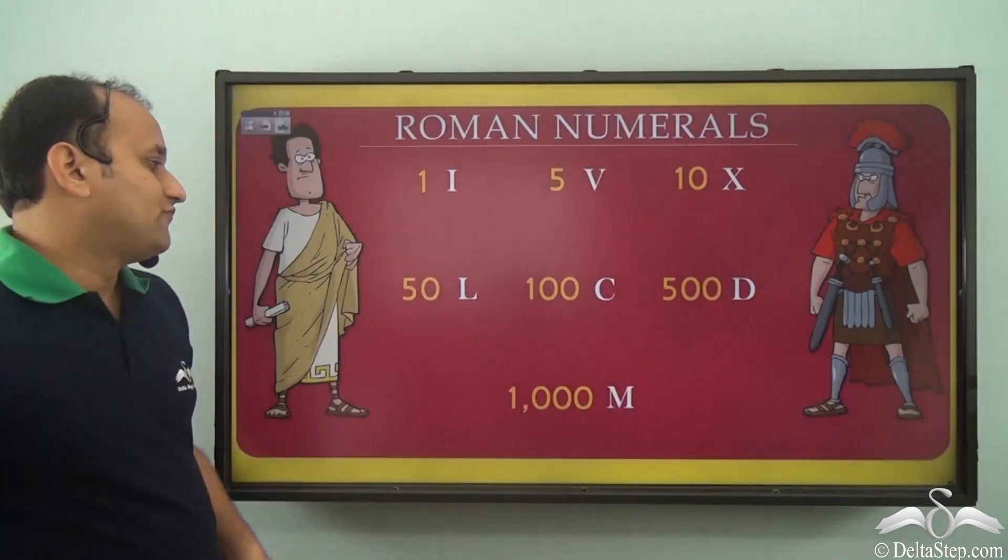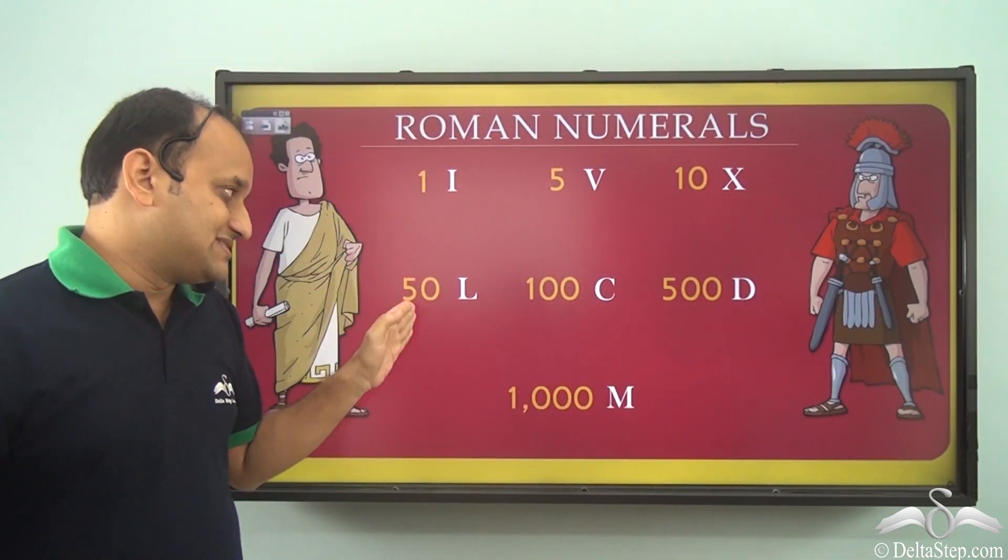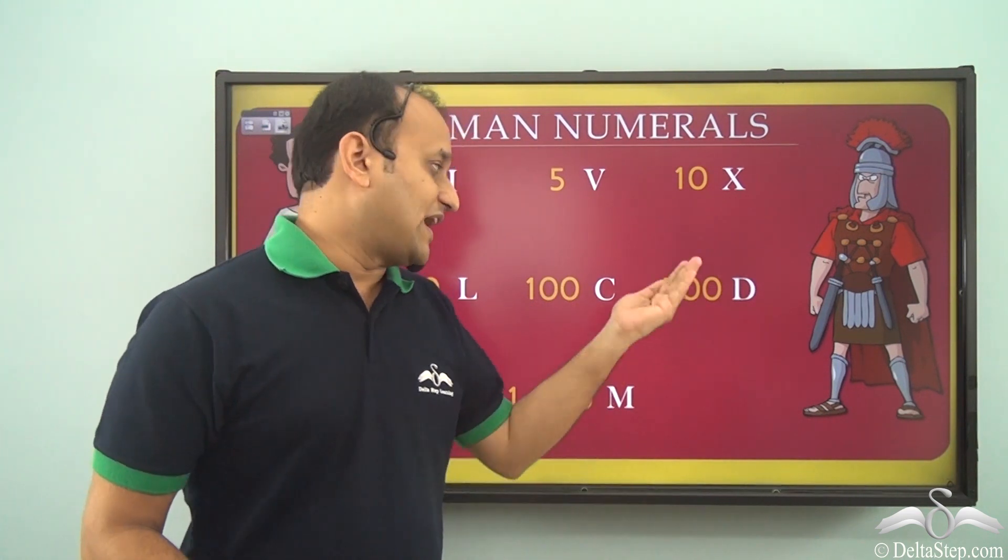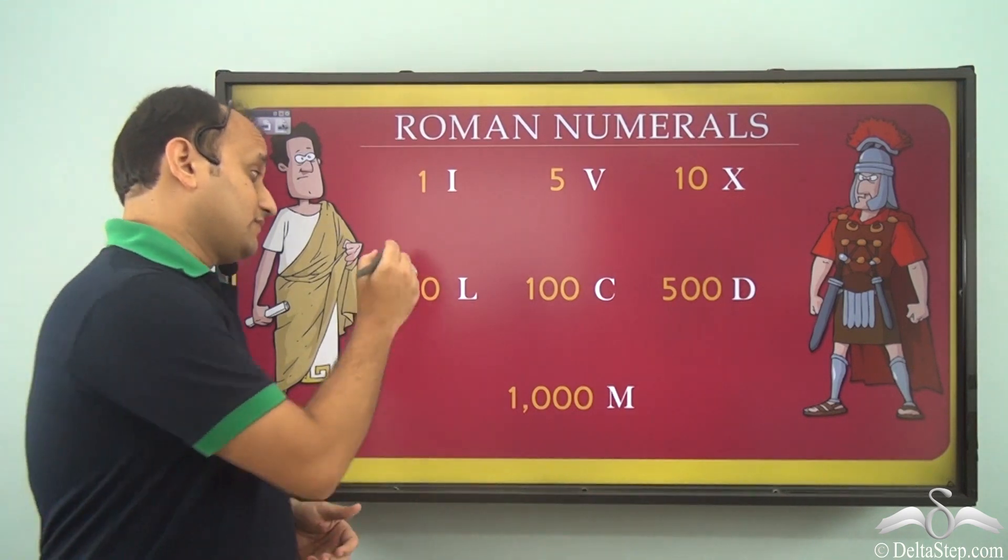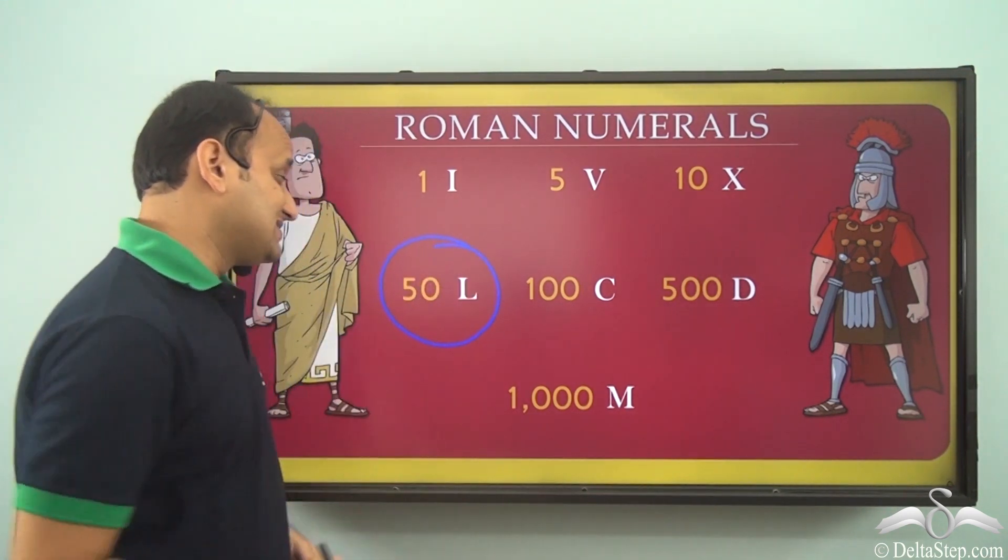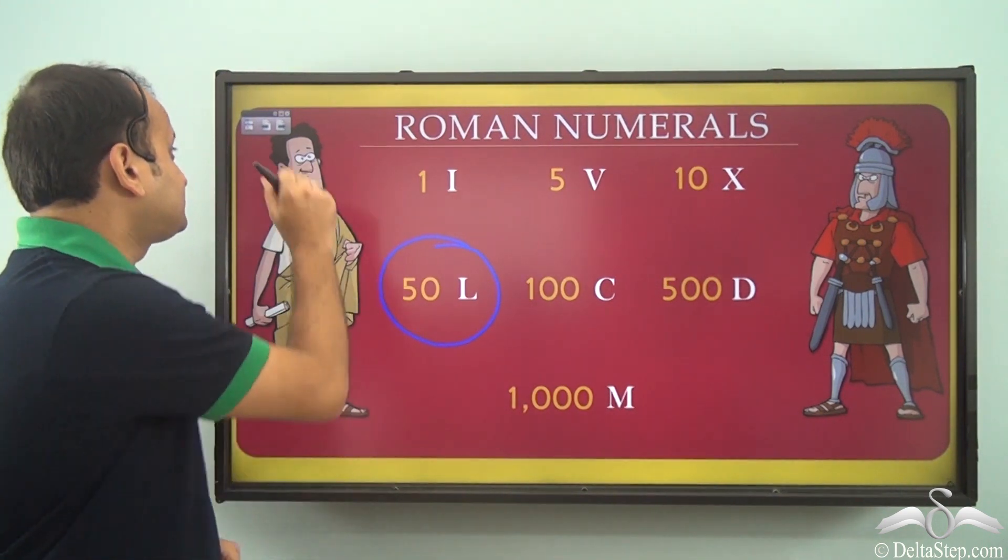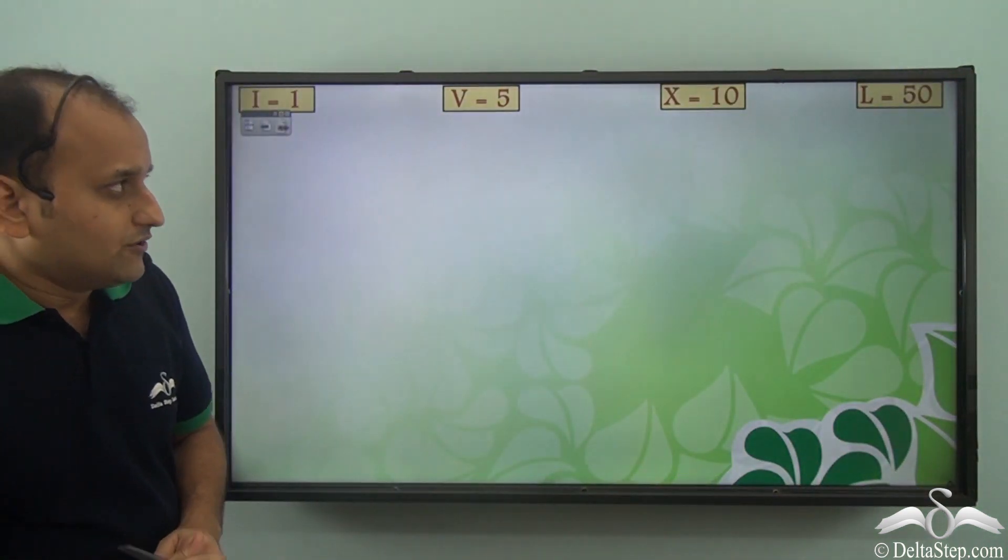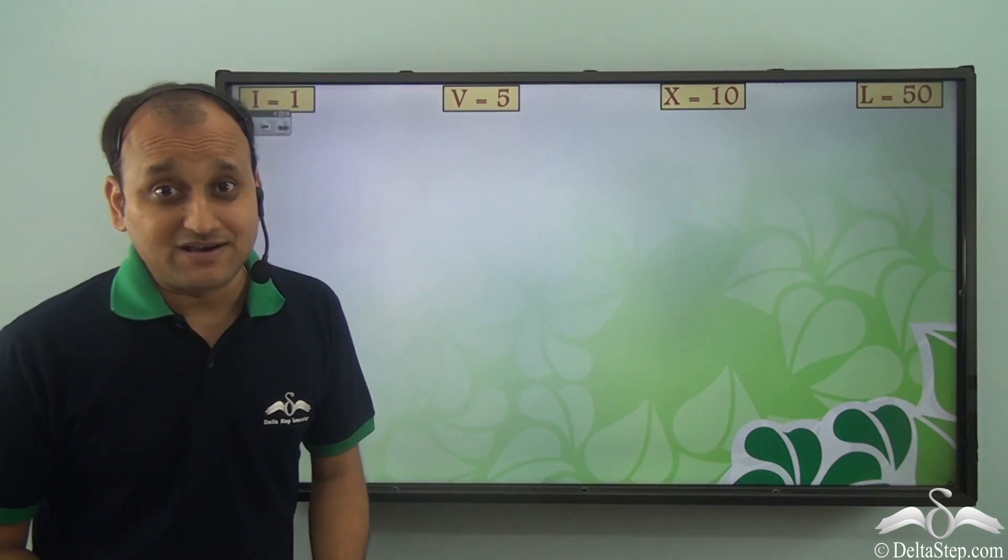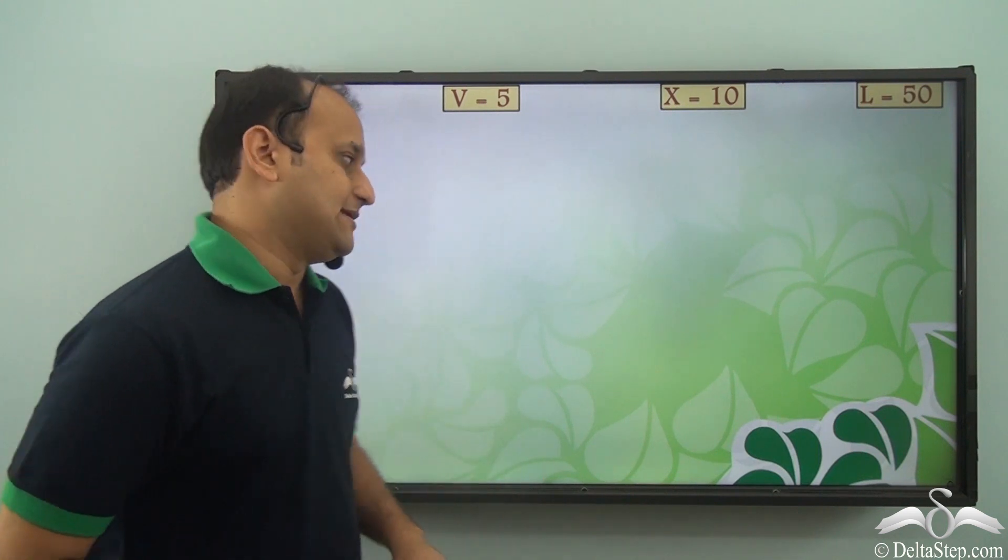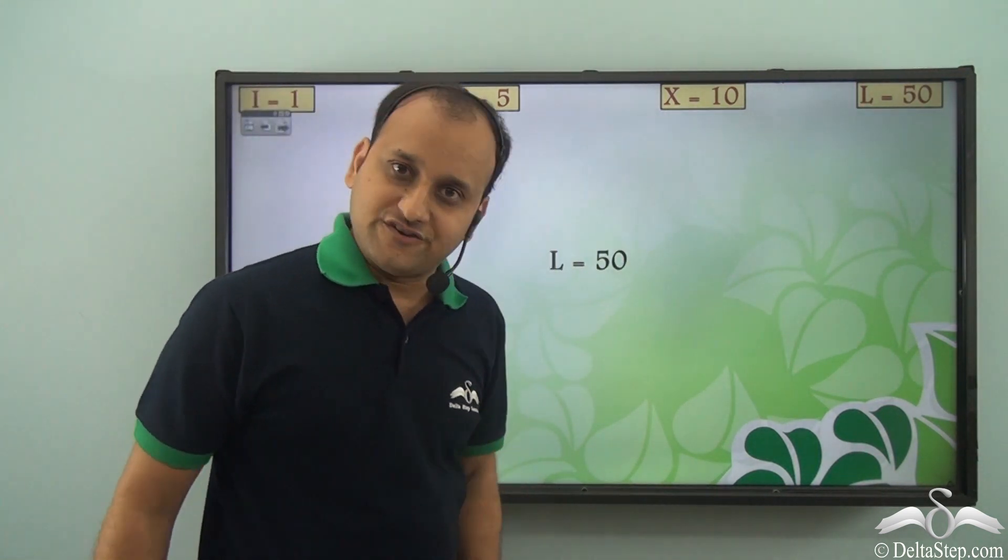Well, for that Romans have symbols representing larger numbers, and using these other numbers can be represented. So here in this case we have L which represents 50. So if we have L equal to 50, how does it help us write 40? Let's see. First of all we know that L is equal to 50.